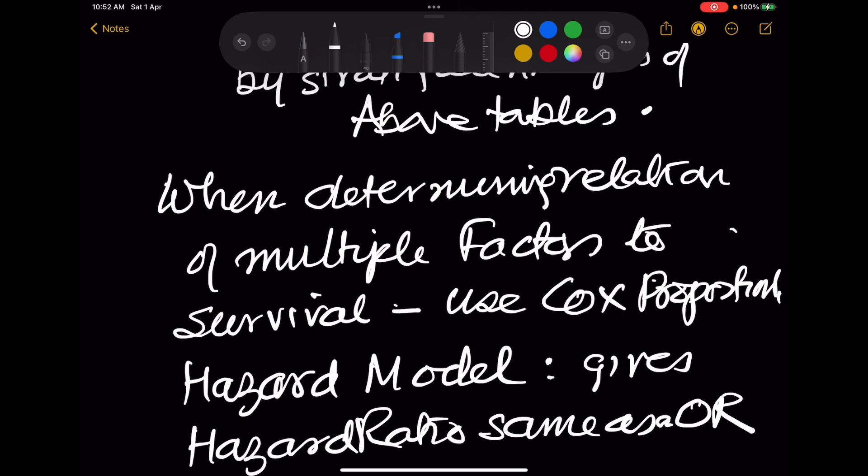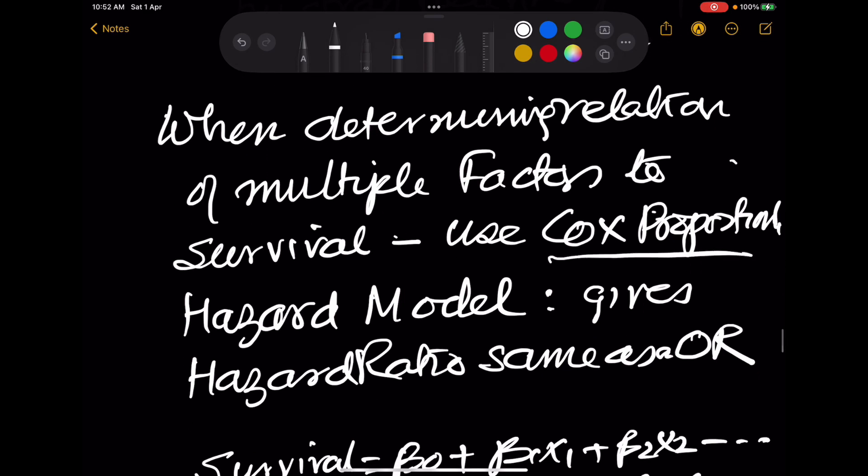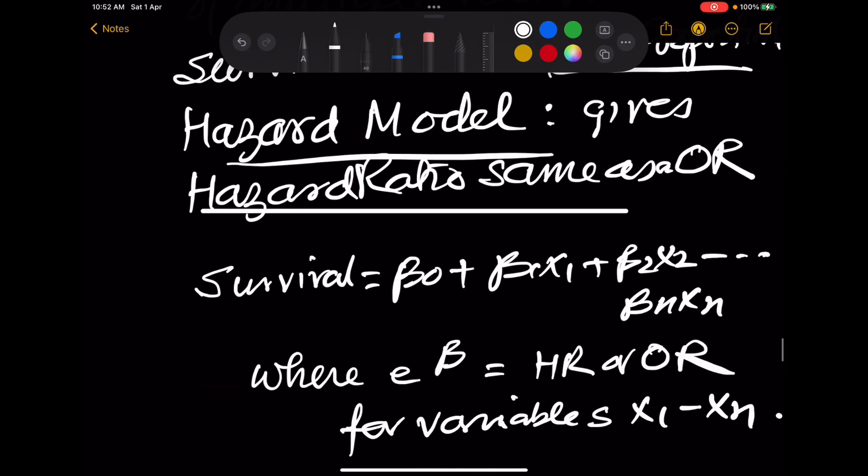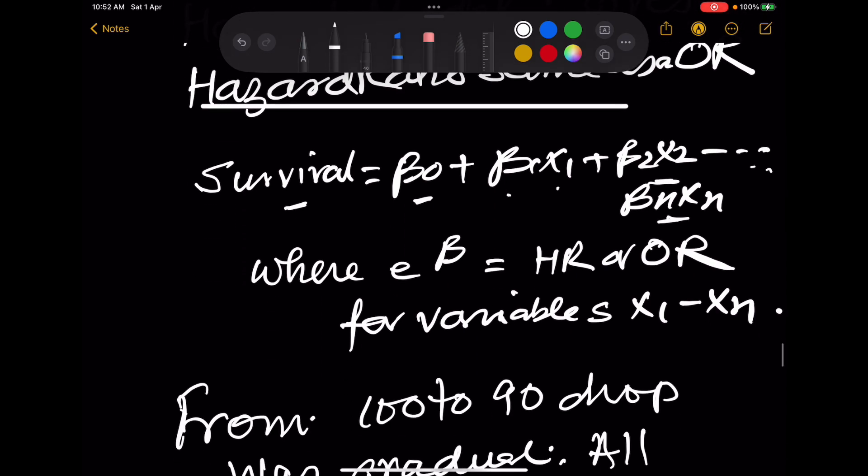Then there can be a situation when we want to find out the effect of many factors like age, like sex, like histological grading. In that you use what is called the Cox proportionate hazard model, which gives us a hazard ratio. Now this hazard ratio is exactly the same as odds ratio. So here survival equals beta 0 plus beta 1 x1 plus beta 2 x2 and so on, beta n xn. Exponential of beta is the hazard ratio or the odds ratio.